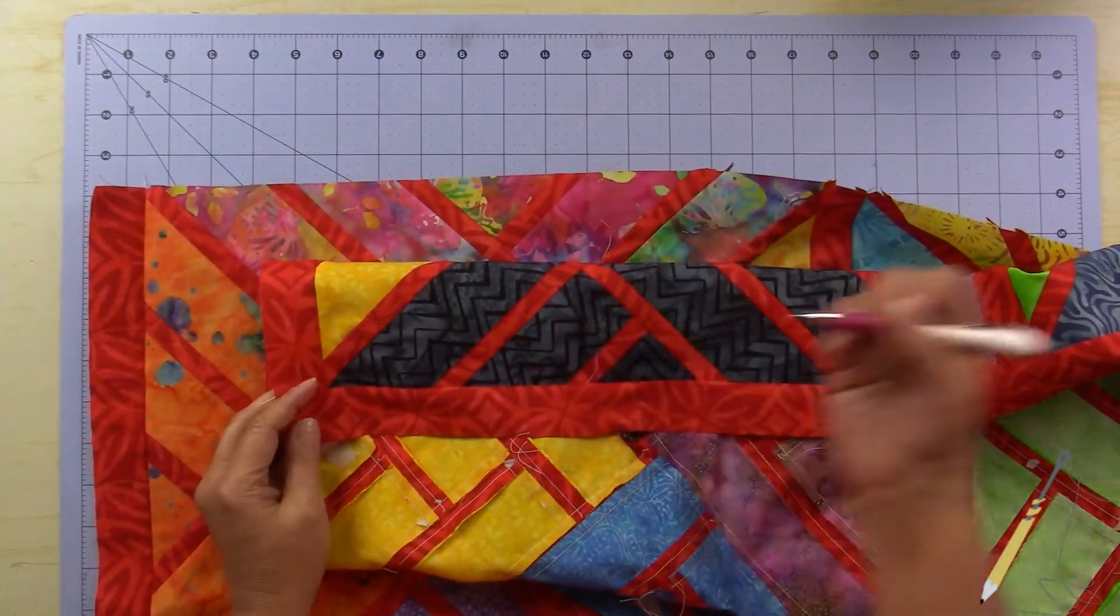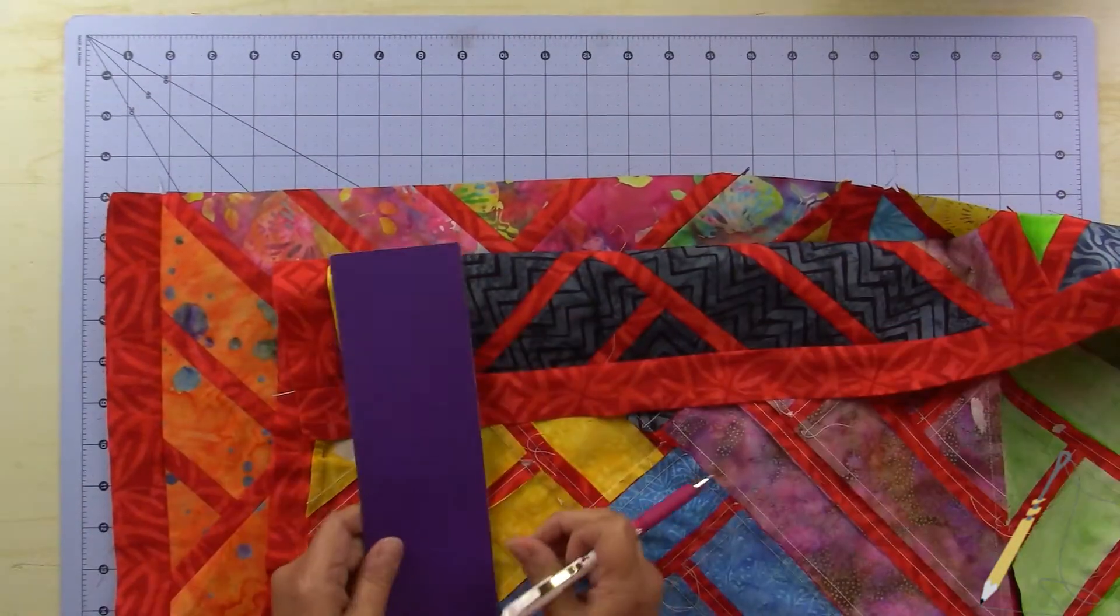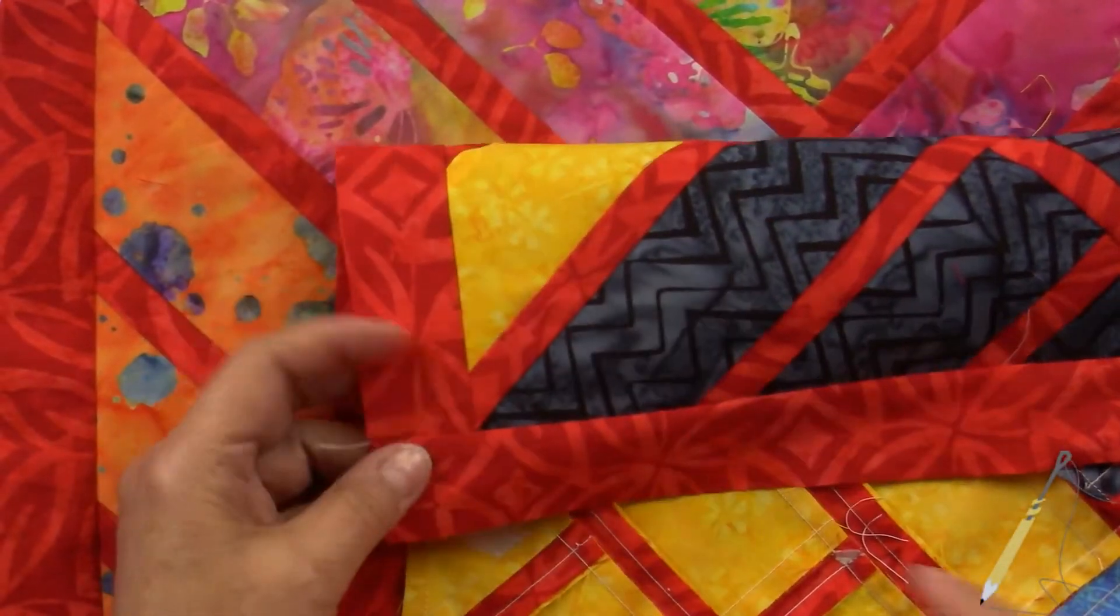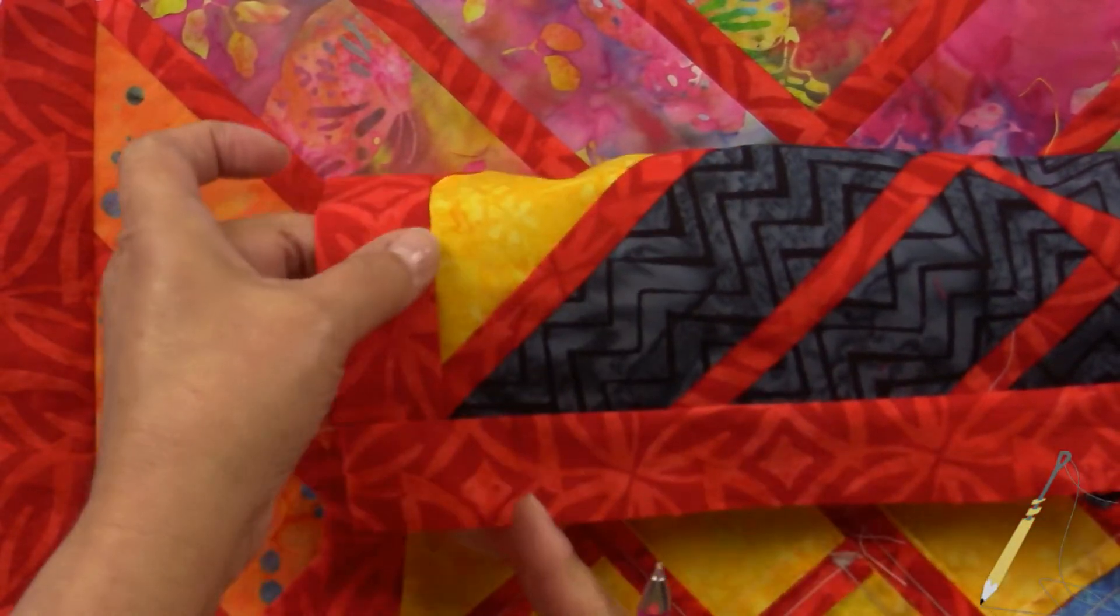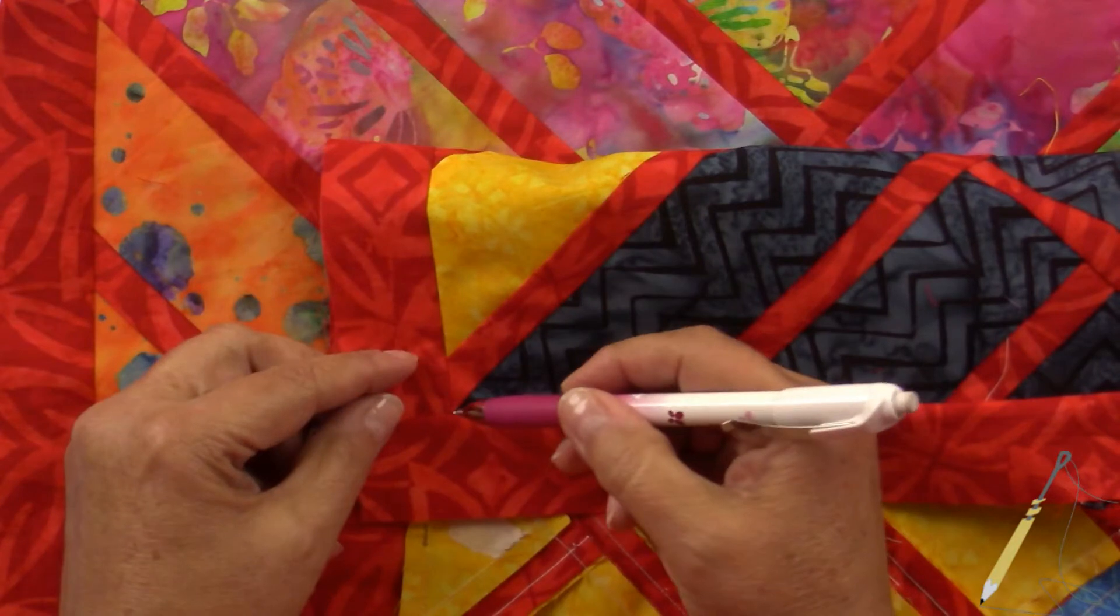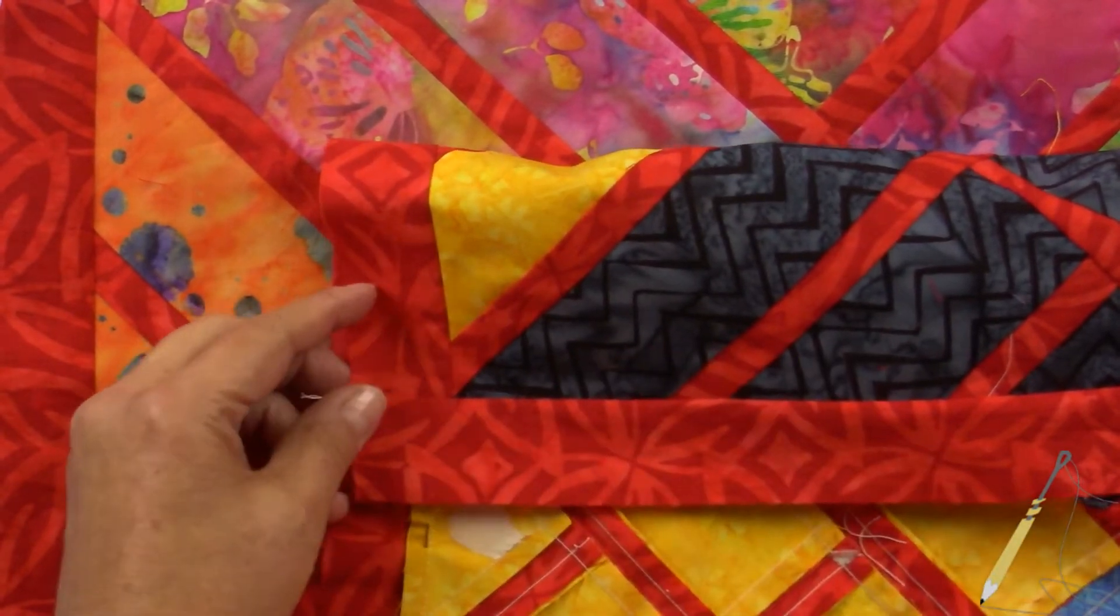For this one, I'm using the white chalky marking pencil. I'm just going to take a straight edge. What I'm doing is looking at the sashing - here's the vertical sashing and here's the horizontal. So this is the line here I want to match up.